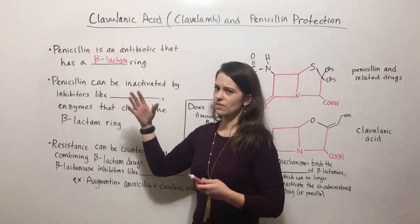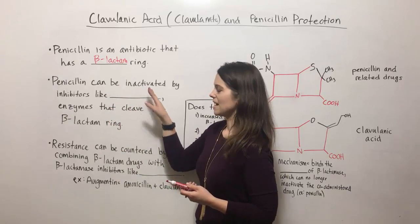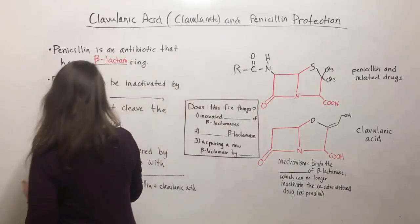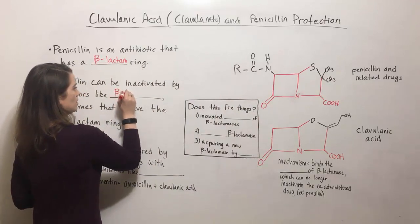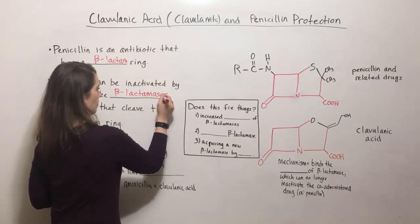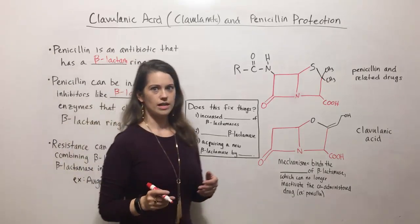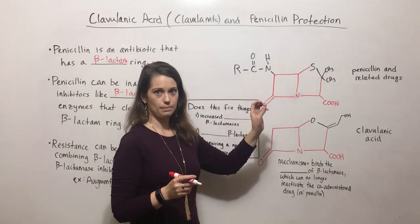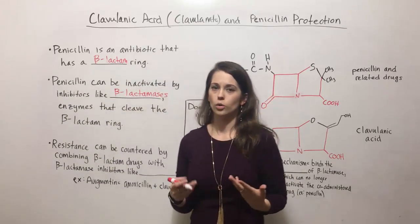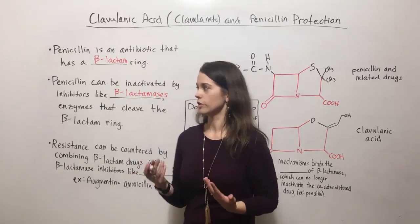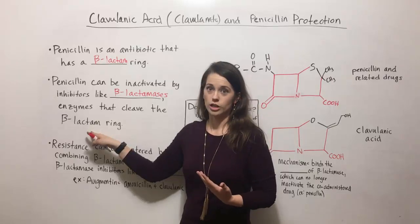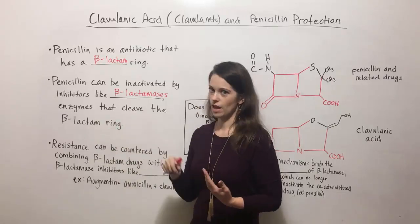Penicillin and these related antibiotics can actually be inactivated by a group of enzymes known as beta-lactamases. Beta-lactamases are enzymes that actually cleave the beta-lactam ring. They cut it, and then penicillin no longer works to inhibit bacterial growth because the structure has been disrupted by the cleavage of that beta-lactam ring.